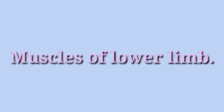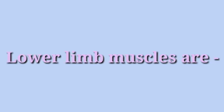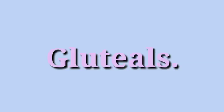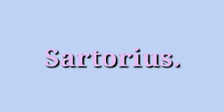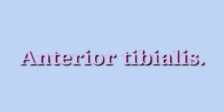Muscles of the lower limb are designed to extend the leg at the knee joint and stabilize the patella. Support of weight, adaptation to gravity, and locomotion are the functions of lower limb muscles. The muscles of the lower limb are: iliacus, quadriceps femoris, obturators, gluteals, sartorius, adductor group, hamstrings, gastrocnemius, tibialis anterior, and soleus.